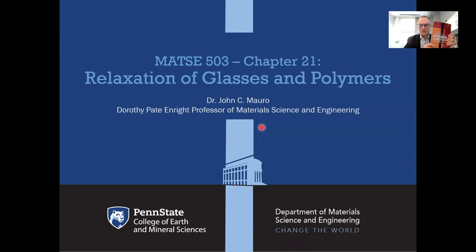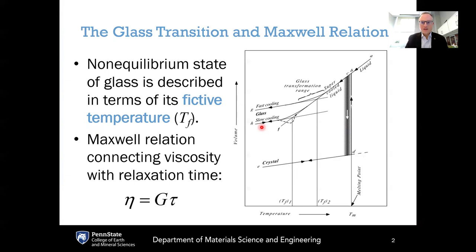Hello, welcome back. We are on chapter 21 of Materials Kinetics, which is relaxation of glasses and polymers. I would like to start today by reminding you of this volume-temperature diagram, which we saw in the previous lecture about the glass transition.